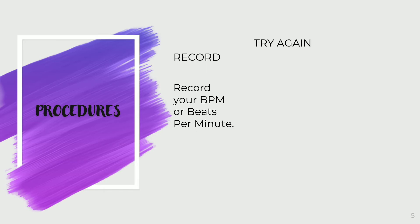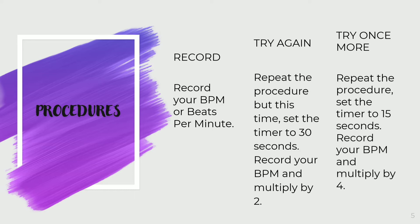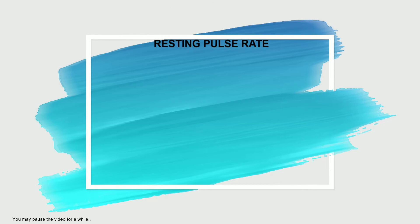After 60 seconds, record your beats per minute or BPM. Then try 30 seconds and record your BPM, multiplied by 2. Try once more at 15 seconds and multiply by 4.